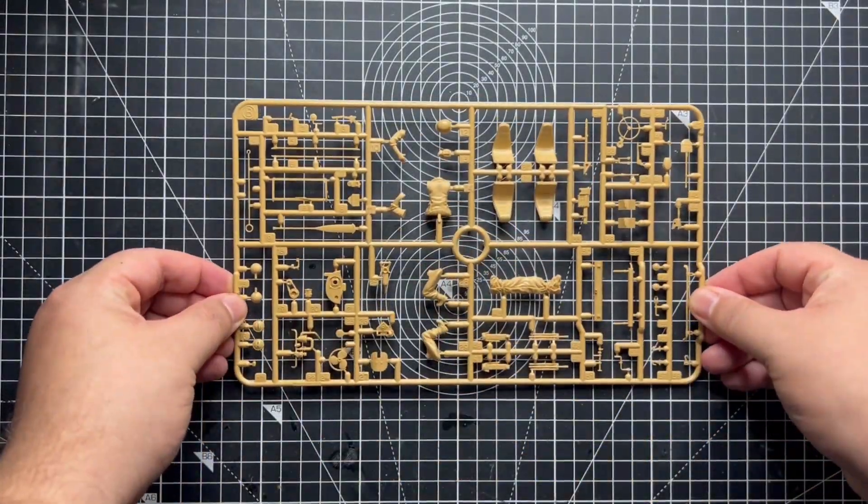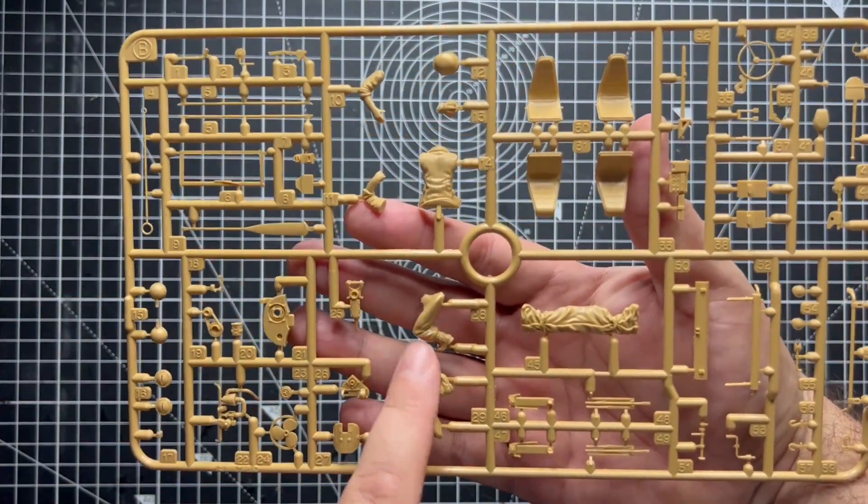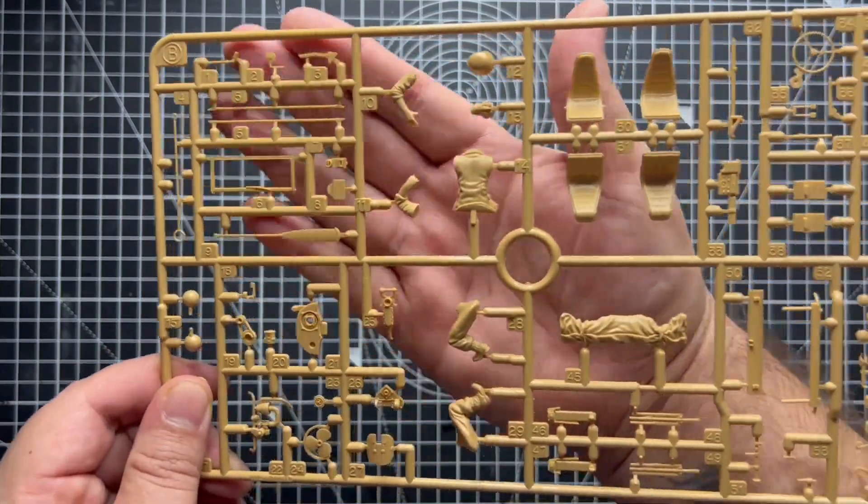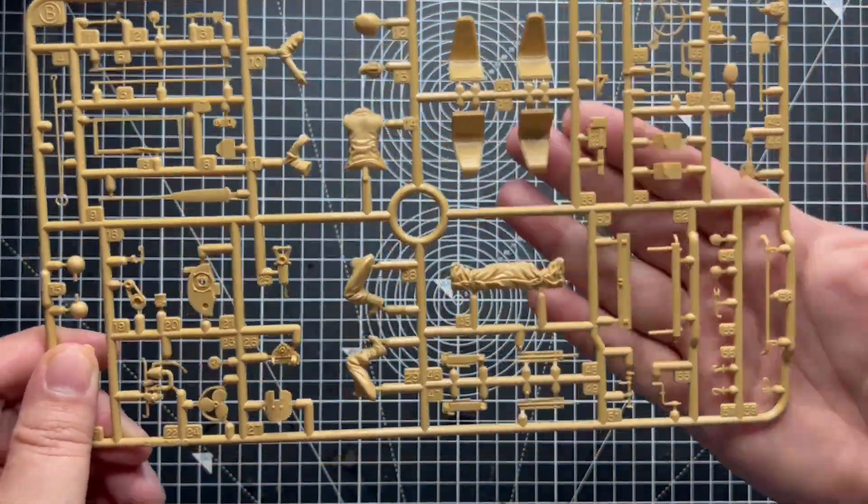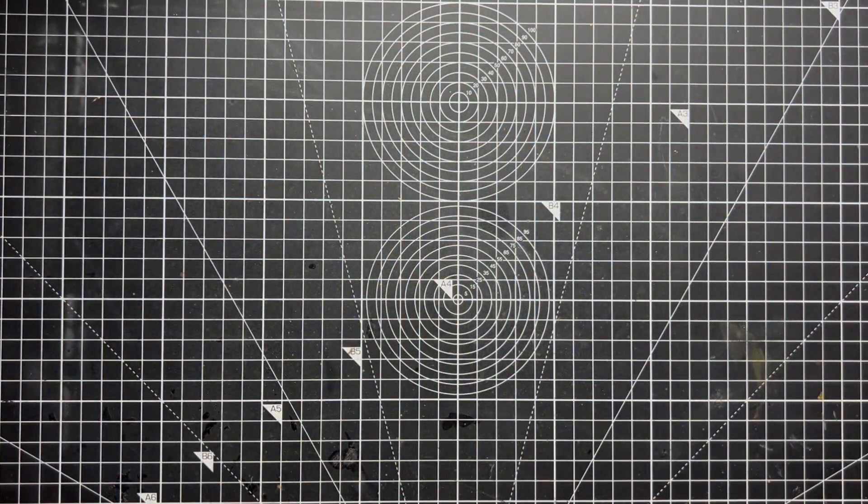Then we have the second and final sprue which again has really nice detail with no flash. We also have the soldier components, some luggage to go on the back, and various small components that go to make up things such as the engine, steering racks, steering wheel, and other little bits such as lights and things like that.